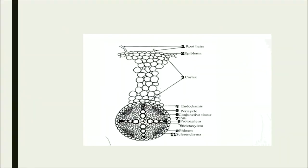Xylem is labeled 8 and 9 in the diagram. You can see a difference in the size of cells. The large cells, number 9, are called meta-xylem — it is the older xylem with large lumen. Proto-xylem, which is comparatively new, has smaller cells. There are patches of phloem in between the xylem tissue, and phloem is responsible for the movement of starch and sugars.